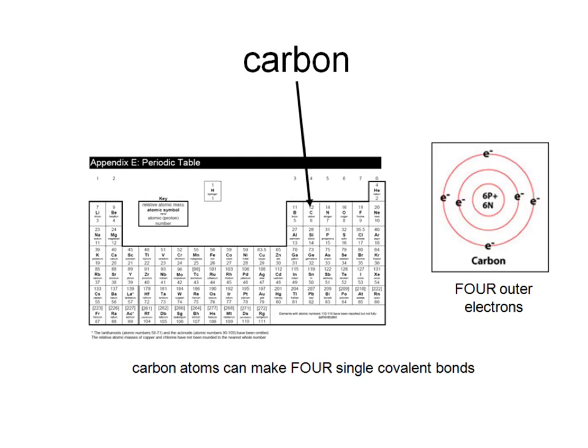Carbon is an element in group four and it has four outer electrons. That means it can make up to four covalent bonds.